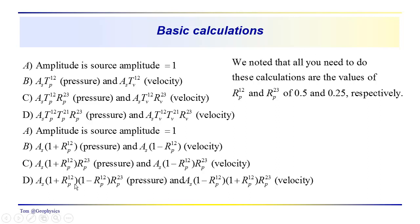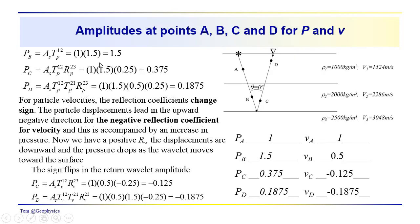Here we're just using the R_P terms. We have one plus R_P(1,2) for the transmission coefficient for pressure, and one minus R_P(1,2) for the transmission coefficient for particle velocity, and so forth. Going through the calculations, the amplitude of the pressure wave at point B is going to be one times 1.5, or 1.5.